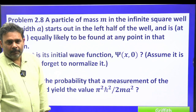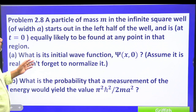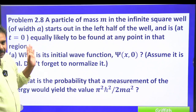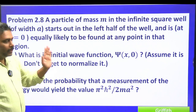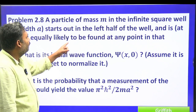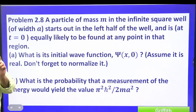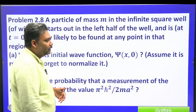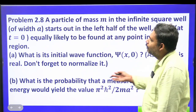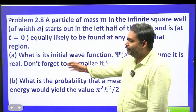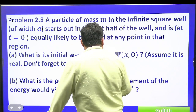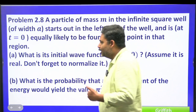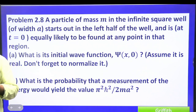Let's go for one more problem from Griffiths — Problem 2.8. The question is very simple but very conceptual. A particle of mass m in the infinite square well of width a starts out in the left half of the well and is equally likely to be found at any point in that region. Part (a): what is the initial wave function ψ(x, 0)? Part (b): what is the probability that a measurement of energy yields the value π²ℏ²/2ma², which is the ground state energy E₁?